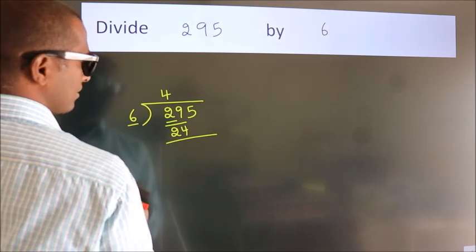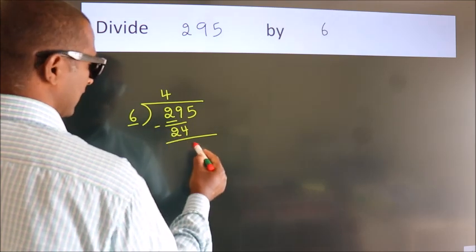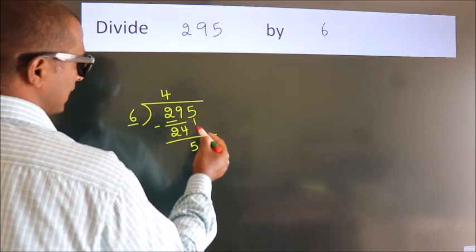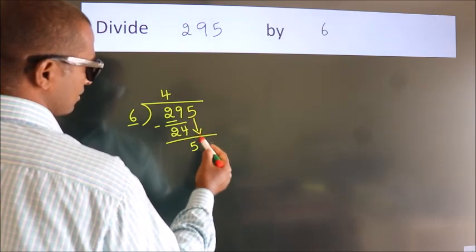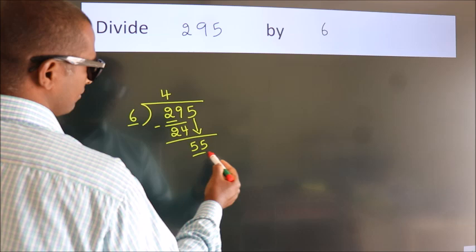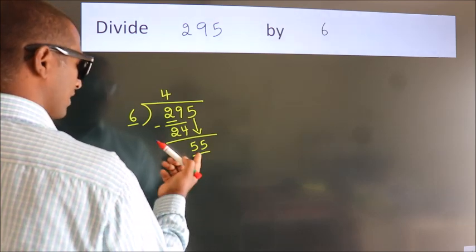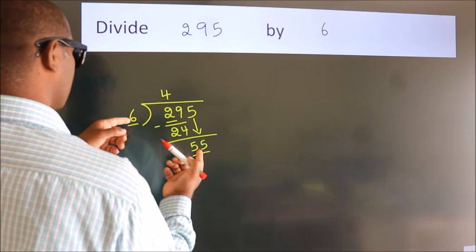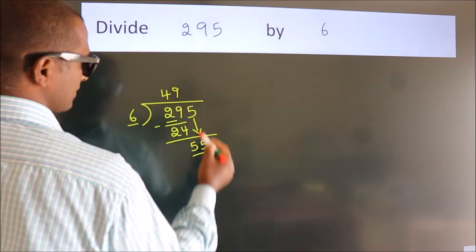Now we should subtract. We get 5. After this, bring down the beside number. So 5 down, giving us 55. A number close to 55 in the 6 table is 6 nines, 54.